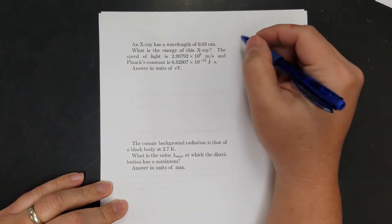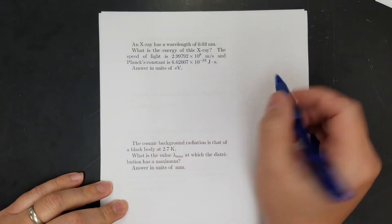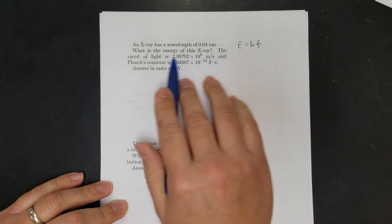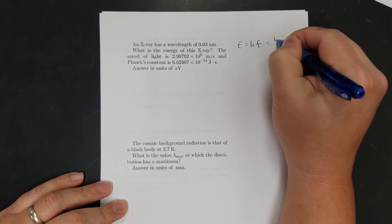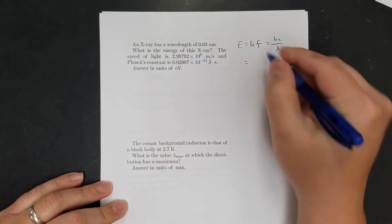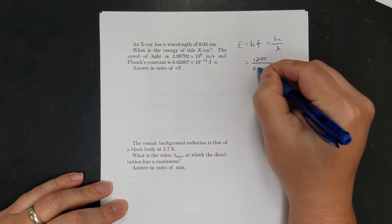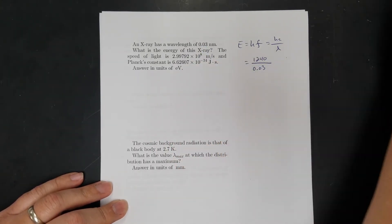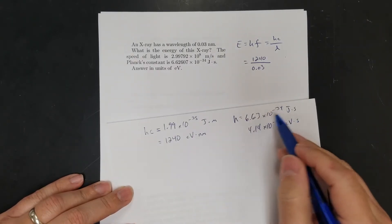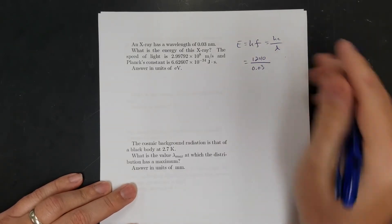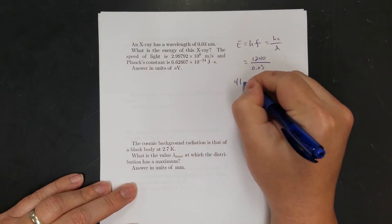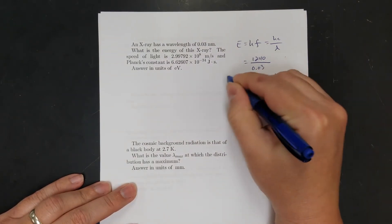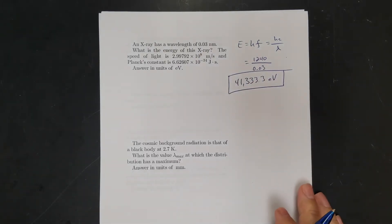That's a lot of photons. Next: an X-ray has a wavelength of 0.03 nanometers — what is its energy? This is straightforward using E = hc/λ. Using the electron-volt version, hc = 1240 eV·nm, so 1240 ÷ 0.03 = 41,333 electron volts. That's a very powerful photon, but it is an X-ray.